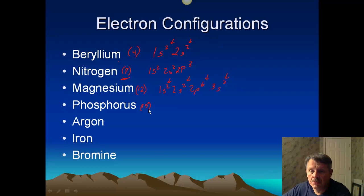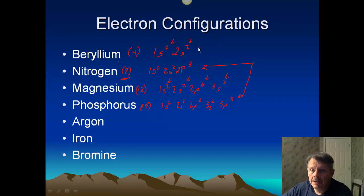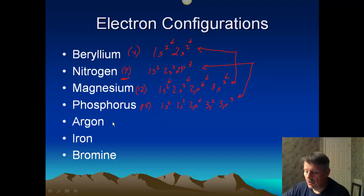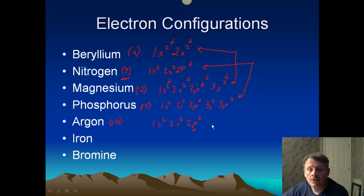Phosphorus is number fifteen — directly under nitrogen. So: 1S2, 2S2, 2P6, 3S2, 3P3. Notice both nitrogen and phosphorus end in P3 — and beryllium and magnesium both end in S2. Elements in the same group end the same way. Argon is number eighteen, a noble gas, so its P block is full: 1S2, 2S2, 2P6, 3S2, 3P6 — totaling eighteen electrons.